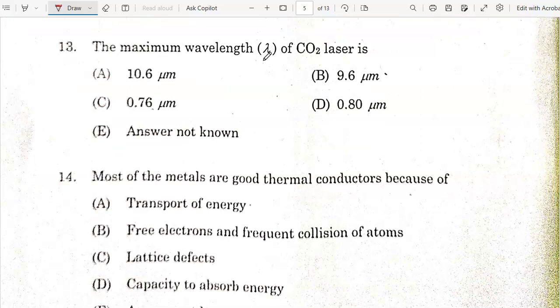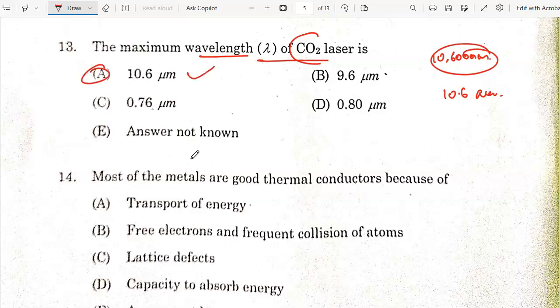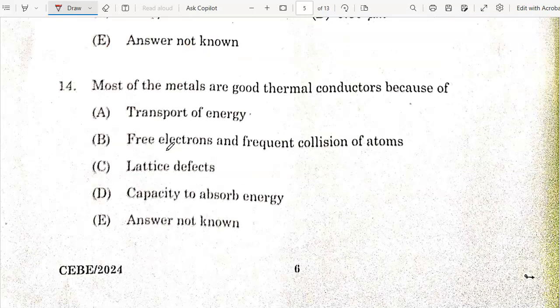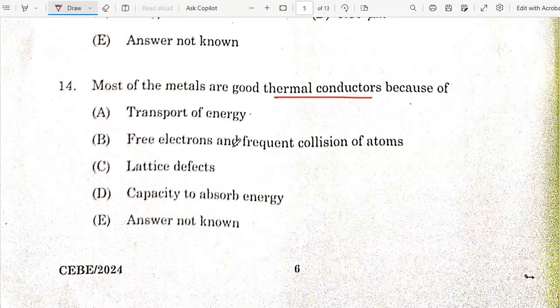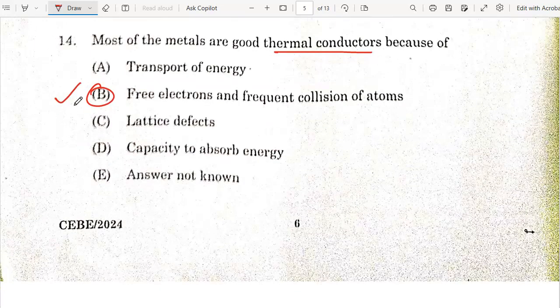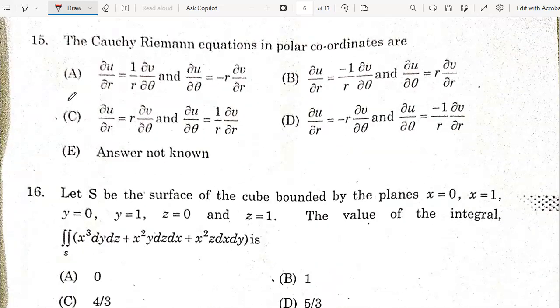The maximum wavelength lambda of CO2 laser is 10,600 nanometers which is nothing but 10.6 micrometers. So option A is the correct answer. Next question: Most of the metals are good thermal conductors because free electrons are there and frequent collision of atoms are there. So option B is the correct answer.